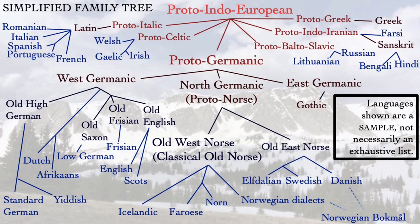But it's surprising to see how different the words for 'and' are between the three major branches of Germanic: East Germanic, including Gothic; North Germanic, which is Old Norse and the modern Scandinavian languages; and West Germanic, which is the rest — English, German, Dutch, etc.